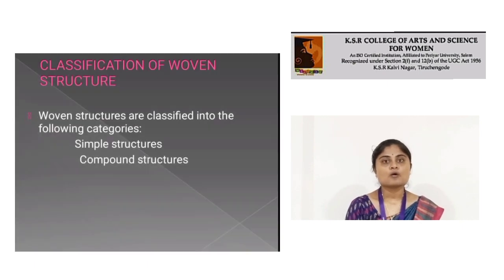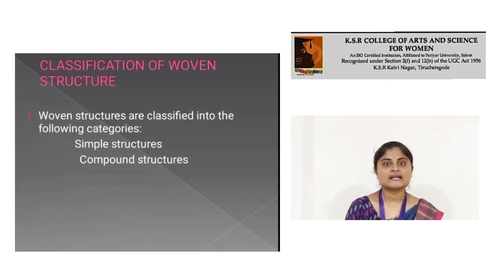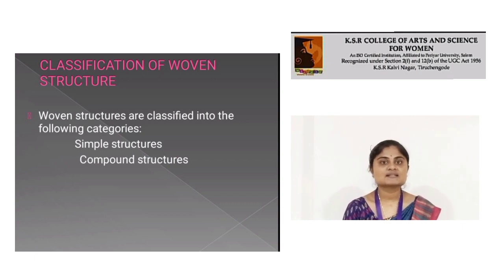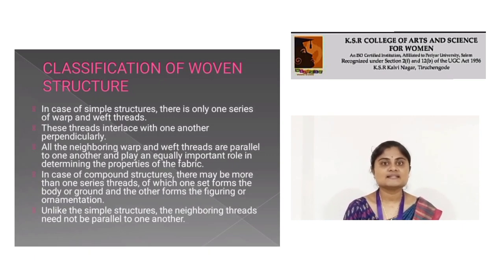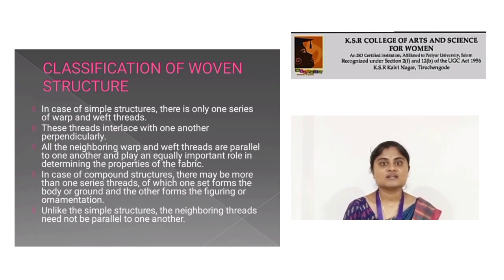Classification of woven structures: Woven structures are classified into the following categories — simple structure and compound structure. In the case of simple structure, there is only one series of warp and weft threads. These threads interlace with one another perpendicularly. All the warp and weft threads are related to one another and play an equally important role in determining the properties of the fabric.